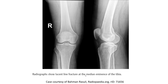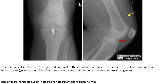Another example of a tibial spine fracture: radiographs show a lucent fracture line at the medial eminence of the tibia. This is an avulsion fracture — the red and white arrows indicate the intercondylar eminence, and a large suprapatellar hemarthrosis is shown by the yellow arrow. Such fractures are associated with injury to the anterior cruciate ligament.